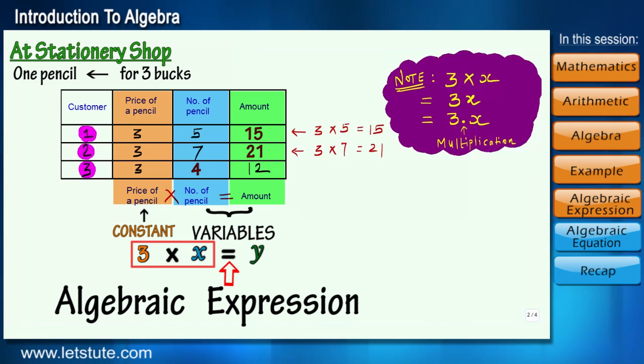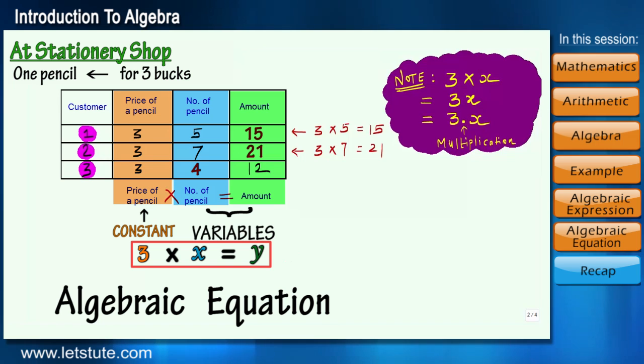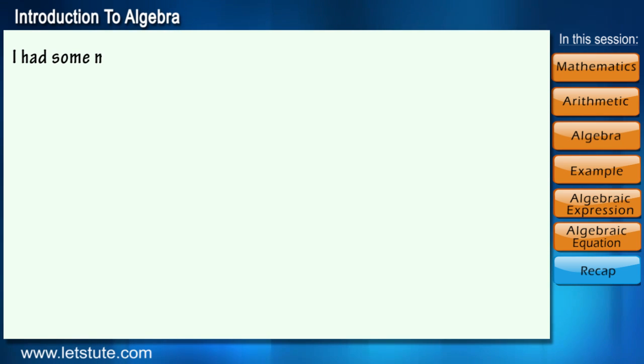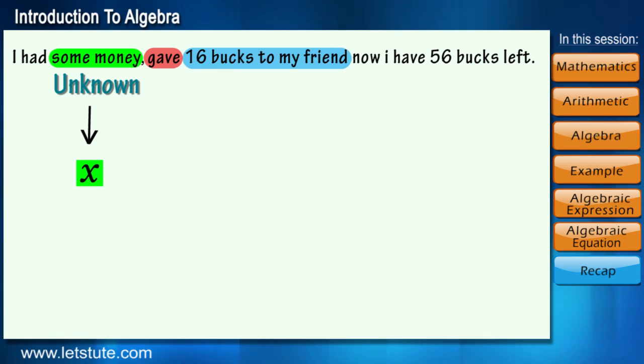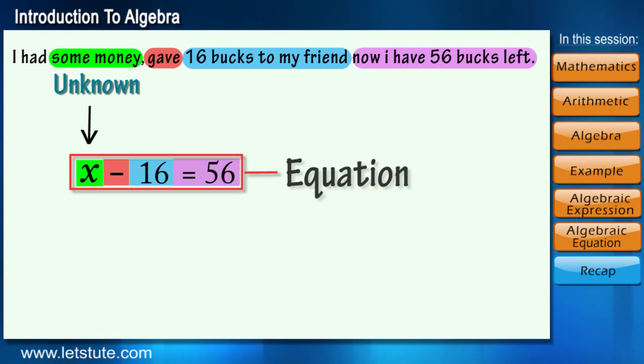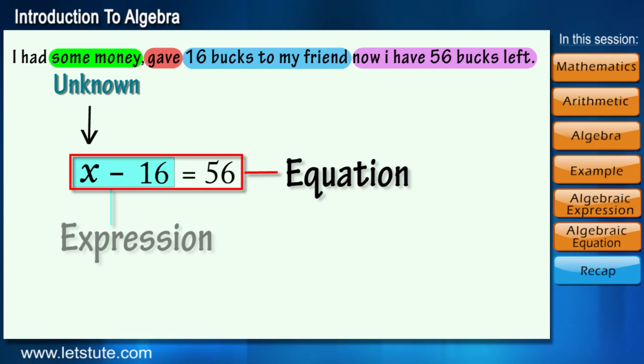Let's have some more examples. Suppose I had some money, I gave 16 bucks to one of my friends, and now I have 56 bucks left. Here the money I had is unknown, and as I gave 16 bucks to one of my friends, that means I need to subtract 16 bucks from my money. So this is the equation and this is the expression.